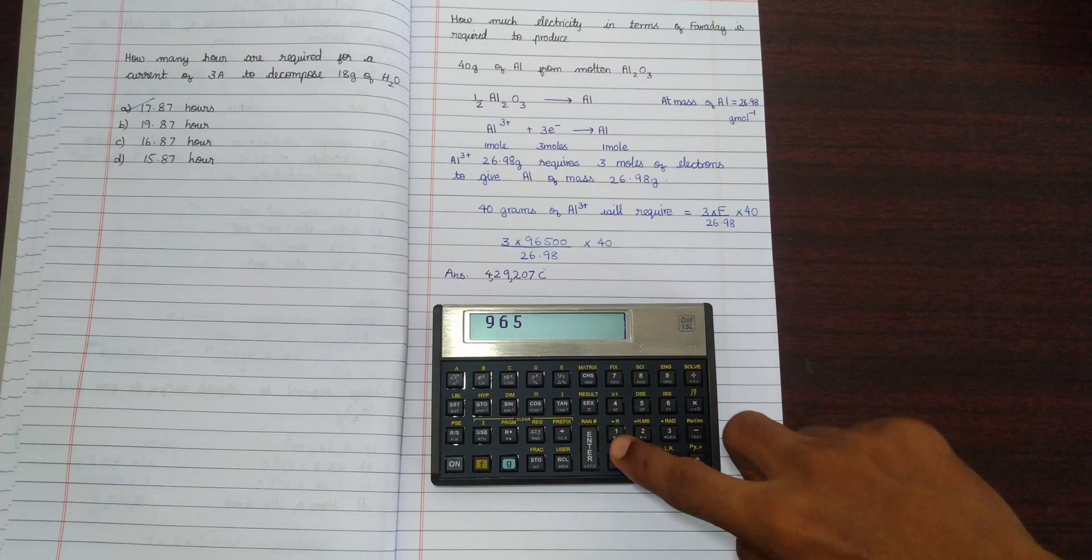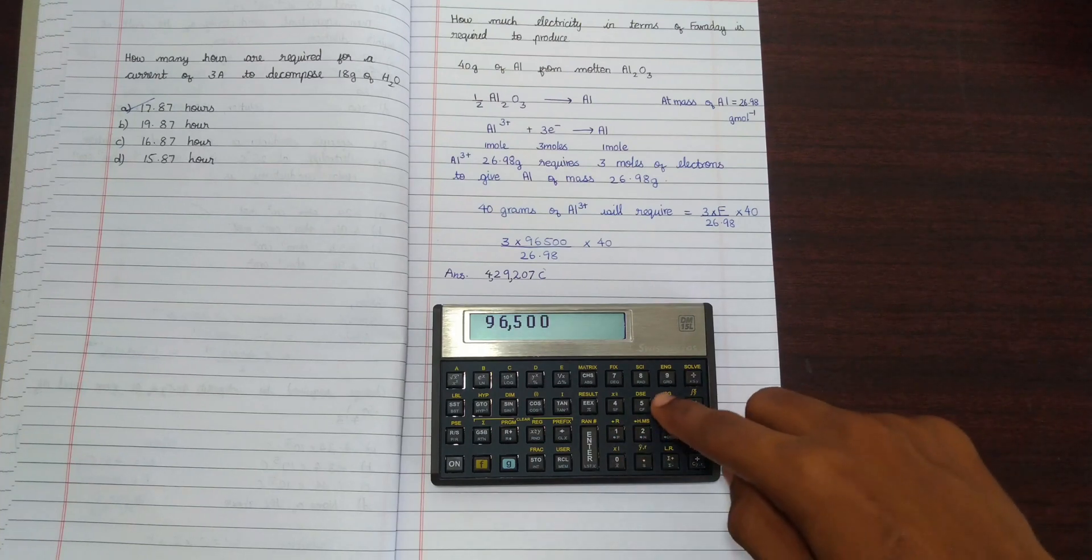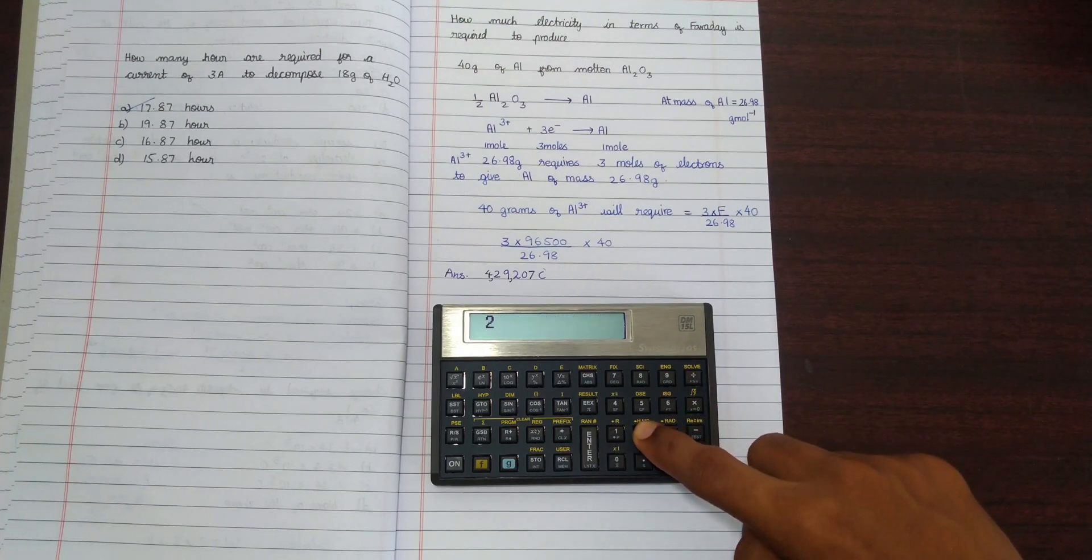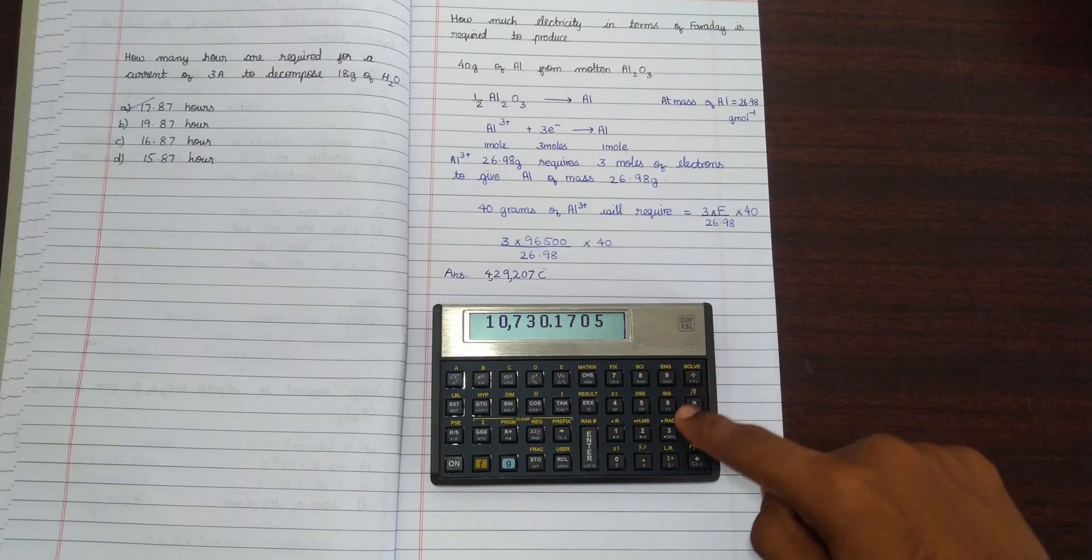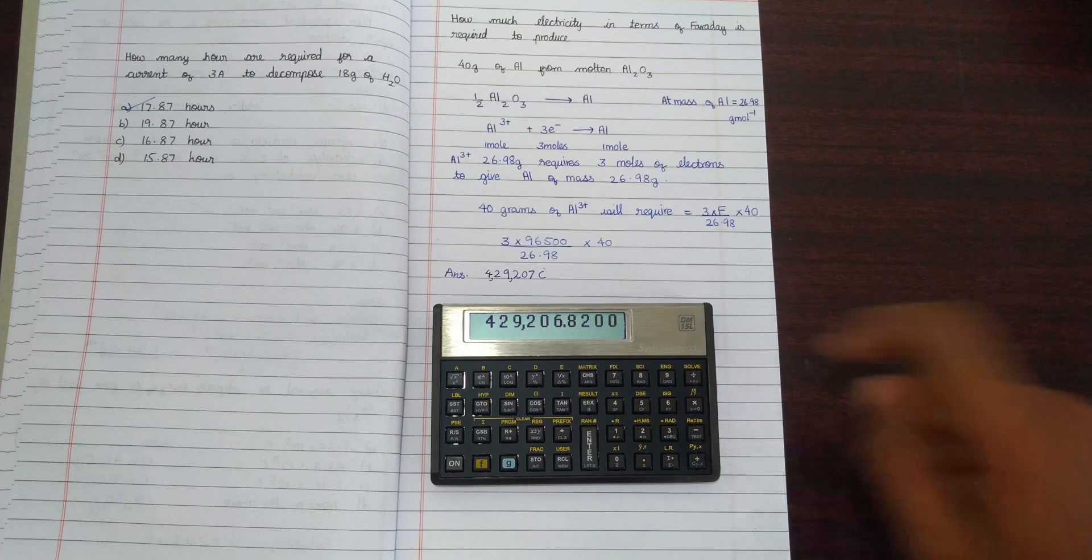The keystrokes for this calculation are: 3 enter 96500 multiply 26.98 divide 40 multiply.